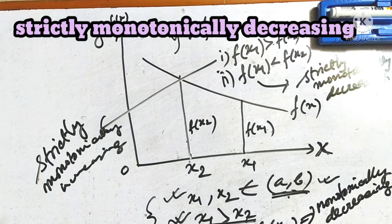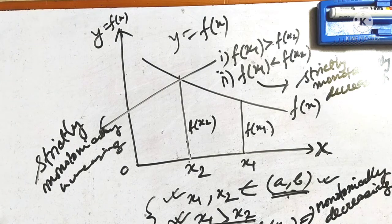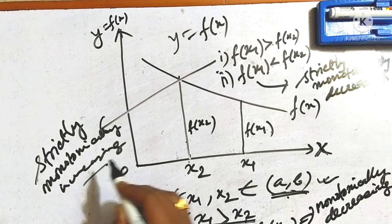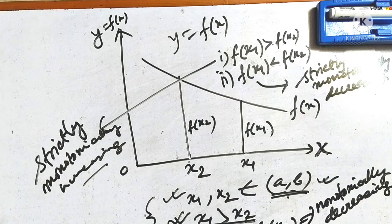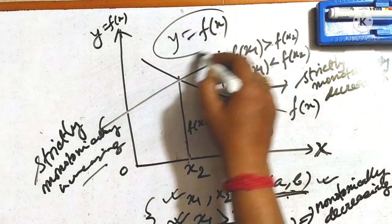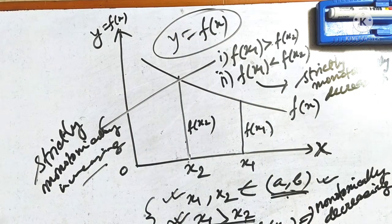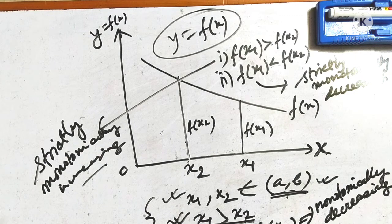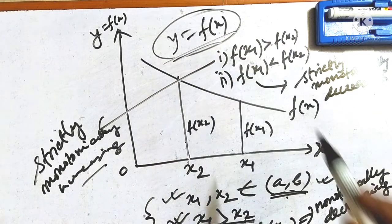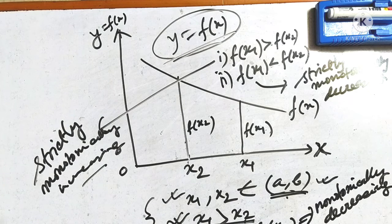So, to summarize: monotonically increasing, monotonically decreasing, strictly monotonically increasing, and strictly monotonically decreasing. Any function y equals to fx is said to be monotonic if the given function is either monotonically increasing or monotonically decreasing.